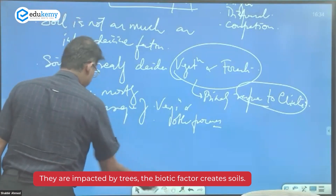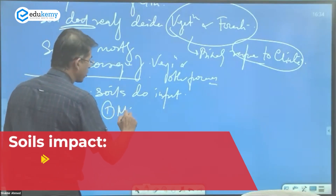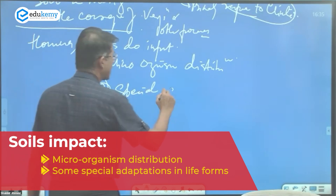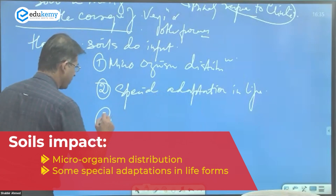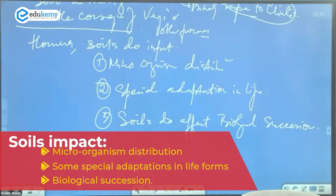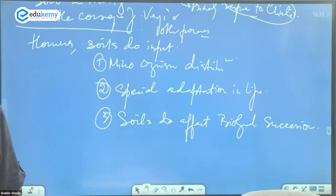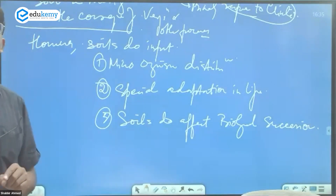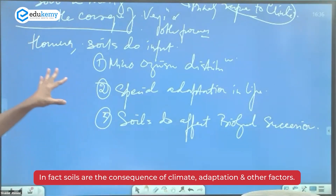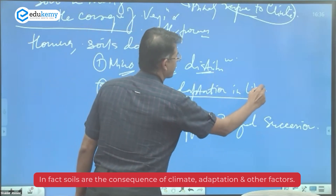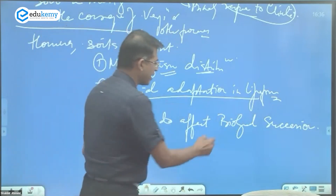Rather than saying soils impact life form distribution, it is actually the reverse: soils are affected by vegetation. The biotic factor creates soils. However, soils do impact: number one, microorganism distribution; number two, special adaptations in life forms; and number three, biological succession.